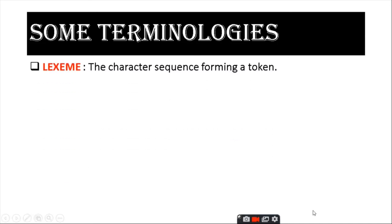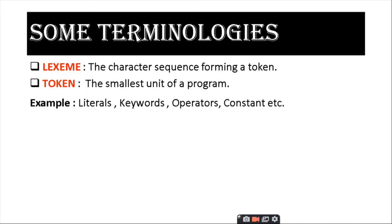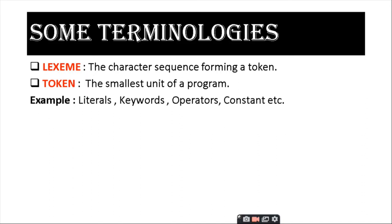The first concept is lexical — the character sequence forming a token. What is a token? A token is the smallest unit of a program, like literals, keywords, operators, and constants. Literals include identifiers and variables. Keywords include if, else, for, while, do while, break, continue, and many more.